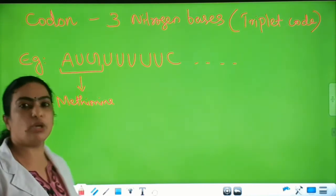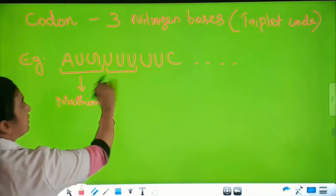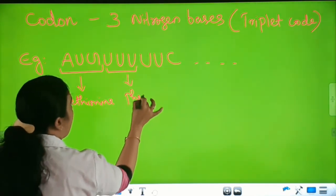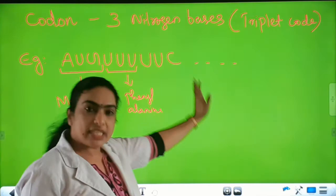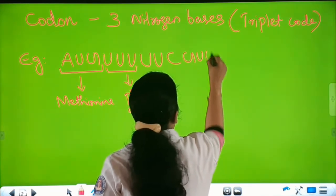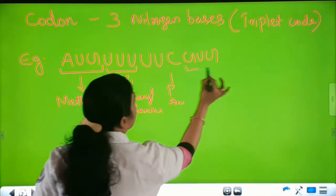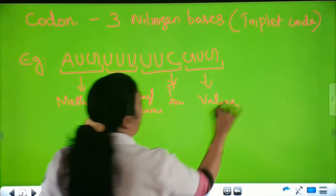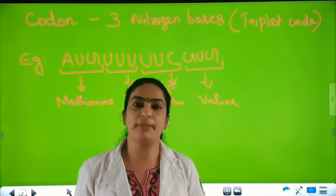The triplet code consists of three nitrogen bases and is called a codon, coding for a specified amino acid. For example, UUU is a triplet codon coding for phenylalanine. UUC also codes for phenylalanine. And GUG codes for another amino acid, valine. So each codon specifies a particular amino acid.